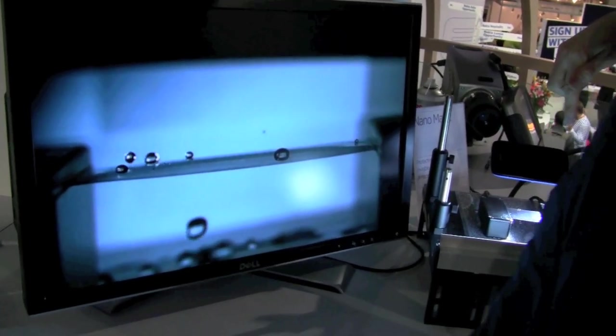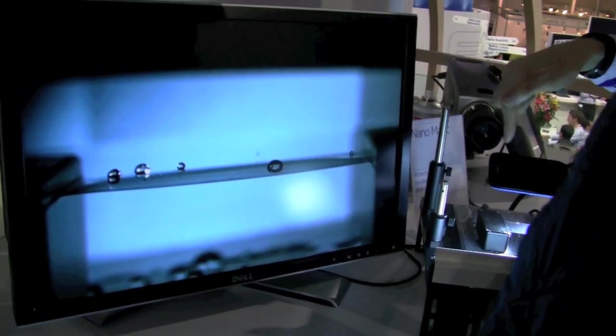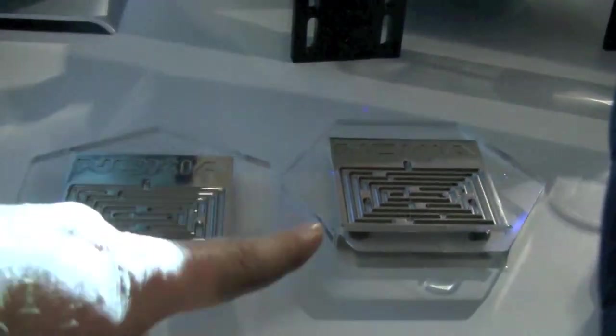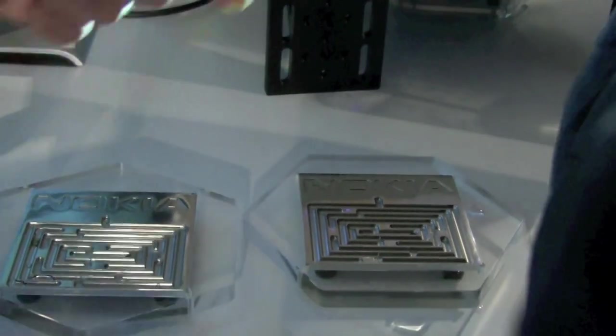So how do we use nano coating for a mobile phone? We have two surfaces here. One is hydrophobic and the other one is super hydrophobic. I can show you how they behave.